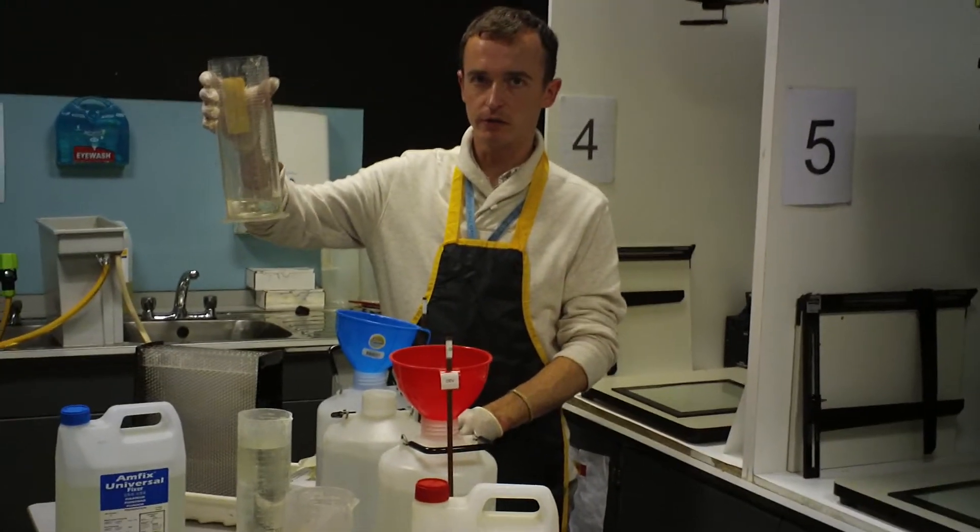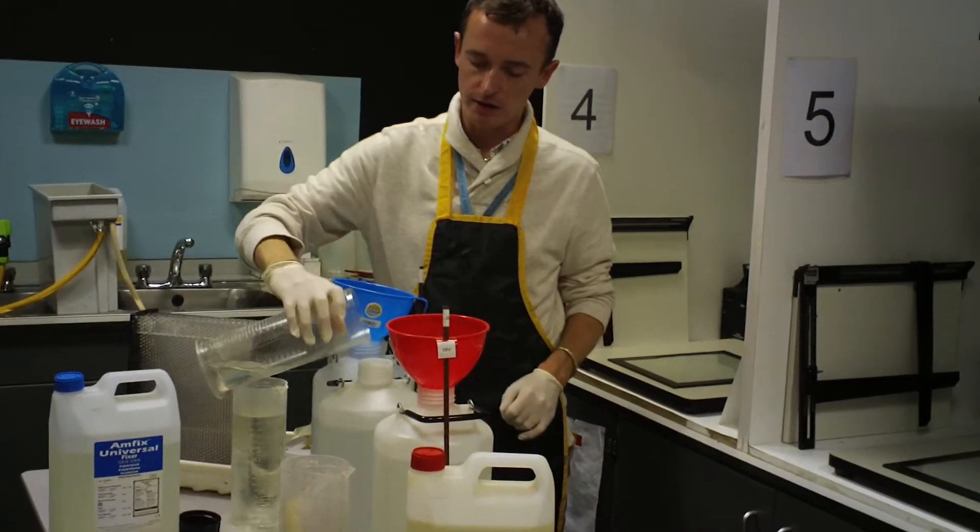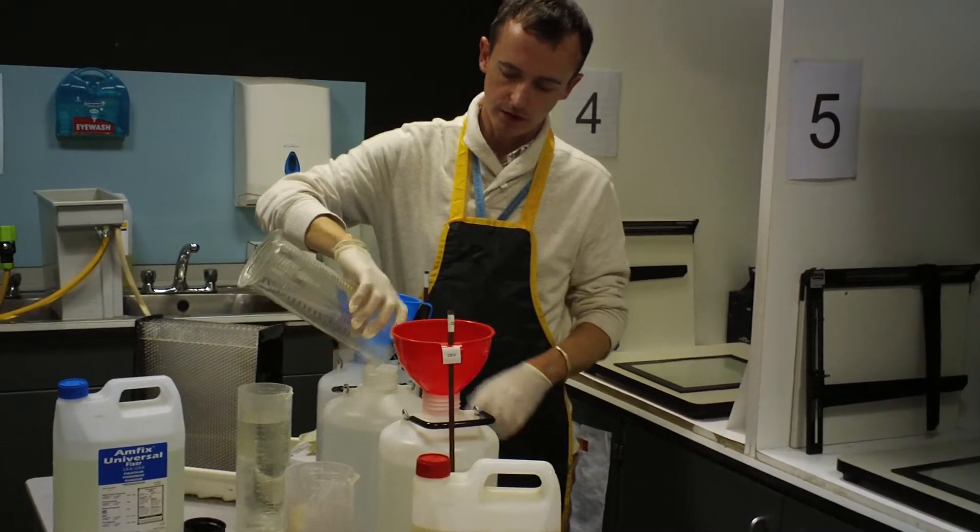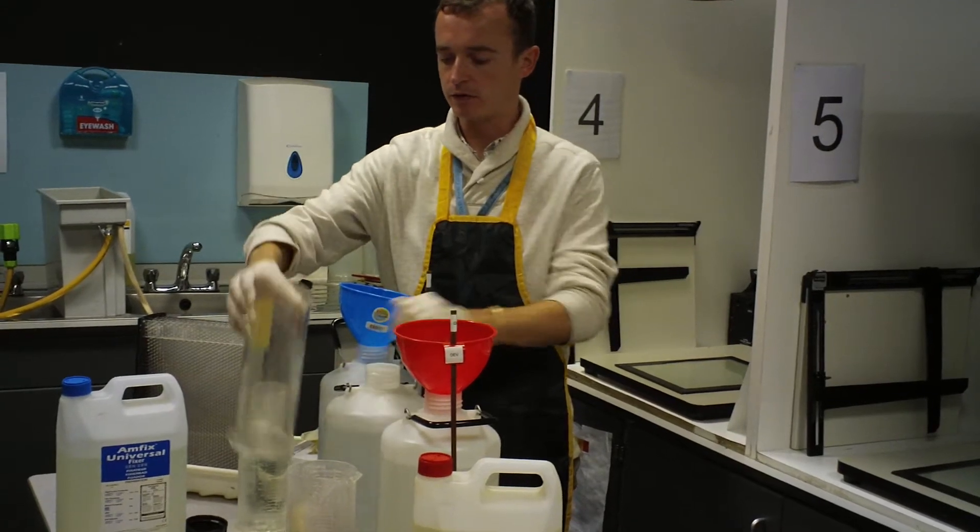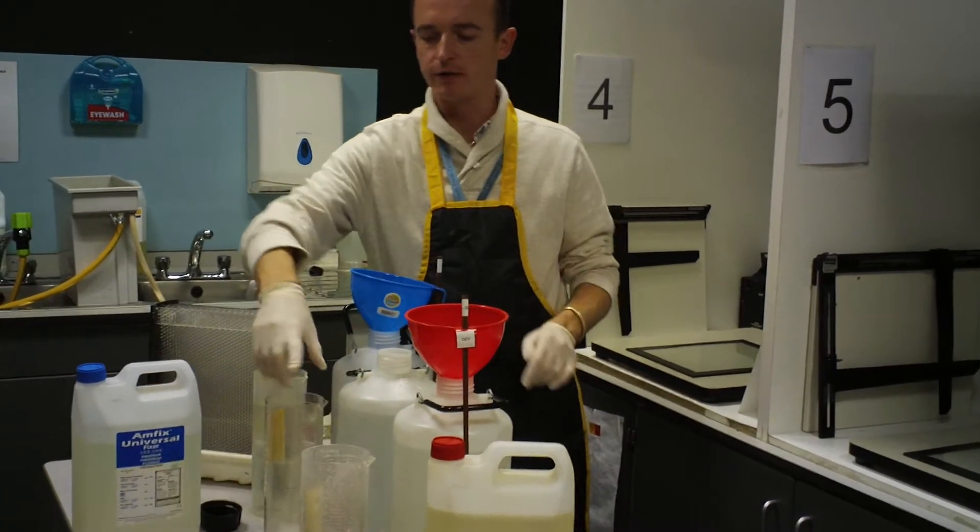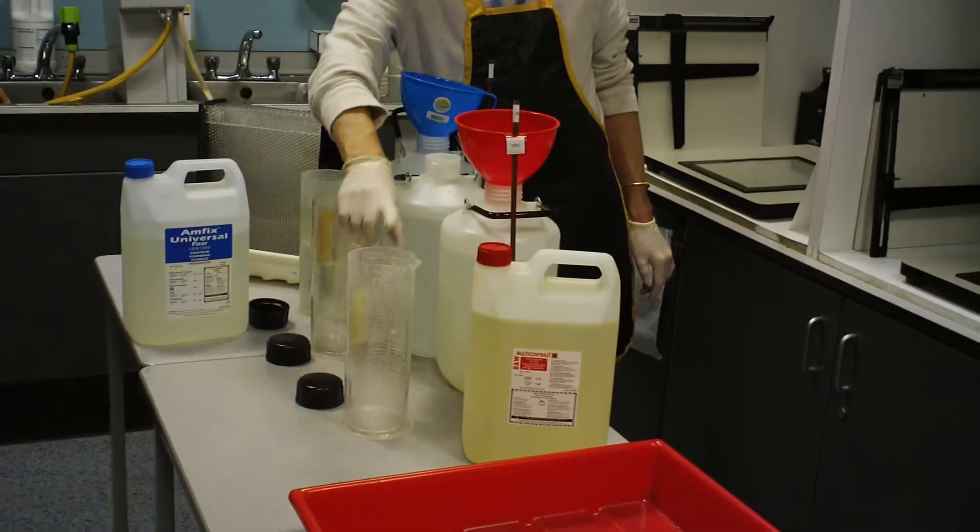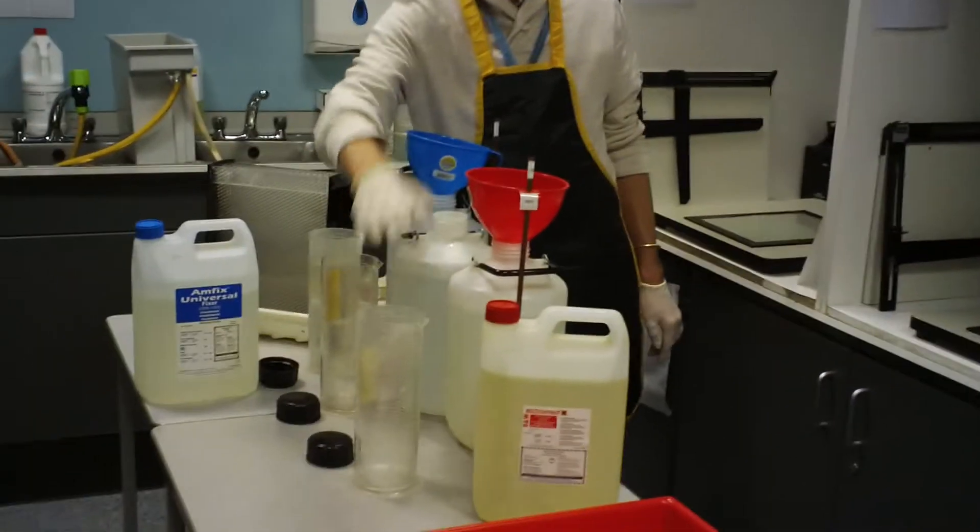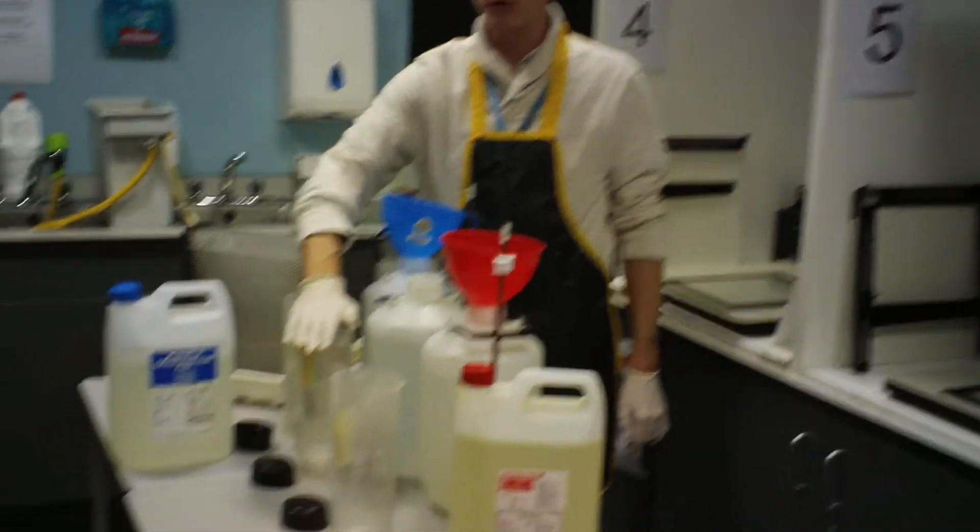For the stop bath, you just use 100 milliliters of the chemical fixer and then 5 liters of water. Just to correct myself, this was 500 milliliters and 4,500, so half a liter and 4.5 liters. 100 milliliters and this is 5 liters.